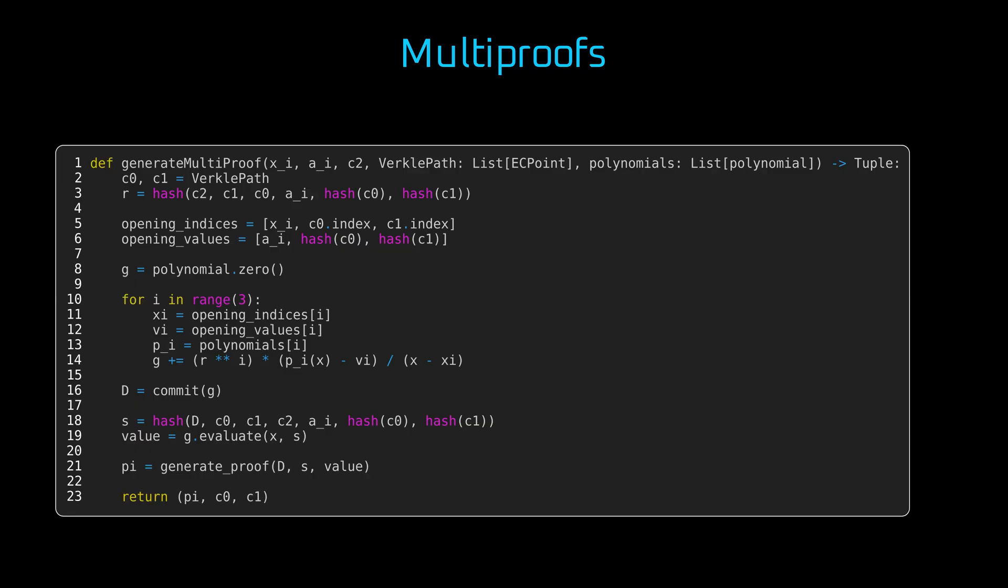But we also multiply each term by increasing powers of R. This avoids cancellation and binds the values cryptographically. Next, we commit to G using our standard polynomial commitment scheme, KZG, IPA, etc., producing commitment D.